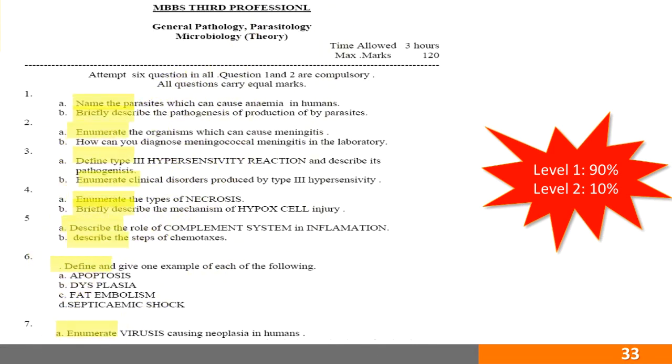Let me read the questions: name the parasites, briefly describe the pathogens, enumerate organisms, define type 3 hypersensitivity, enumerate clinical disorders, and so forth. One question can be said to be of level 2, that is how can you diagnose meningitis.